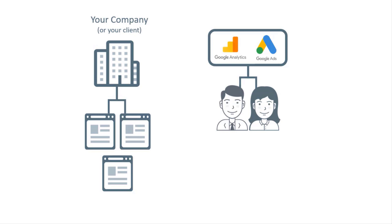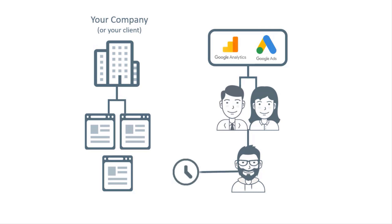In the older days, the only way to do that was to ask a developer. And since developers are quite busy and have their own priorities, tracking codes are somewhere at the end of that list. That's why it usually takes days, weeks, sometimes even months to implement those tracking codes.